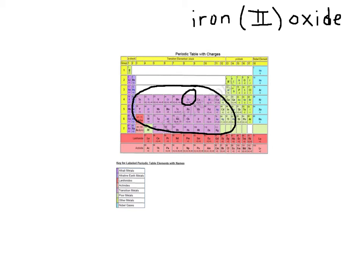So how would you know whether it's iron +2 or iron +3? If you're given the name of the compound, you'll be told the ion charge.